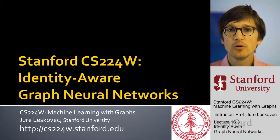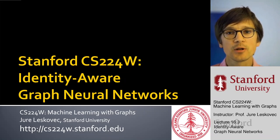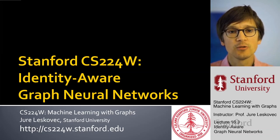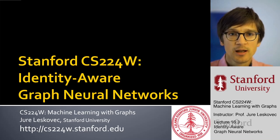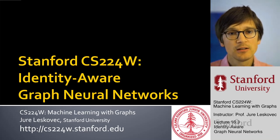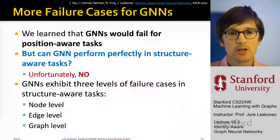We are going to move forward to the next topic, which is called Identity-Aware Graph Neural Networks. In the previous part of the lecture, we talked about how does the node encode its position in the network — how does the node know where in the network it is. Now in the second part, we are going to develop a more expressive graph neural network that accounts for different symmetries that can appear in the underlying graph, making the GNN more expressive.